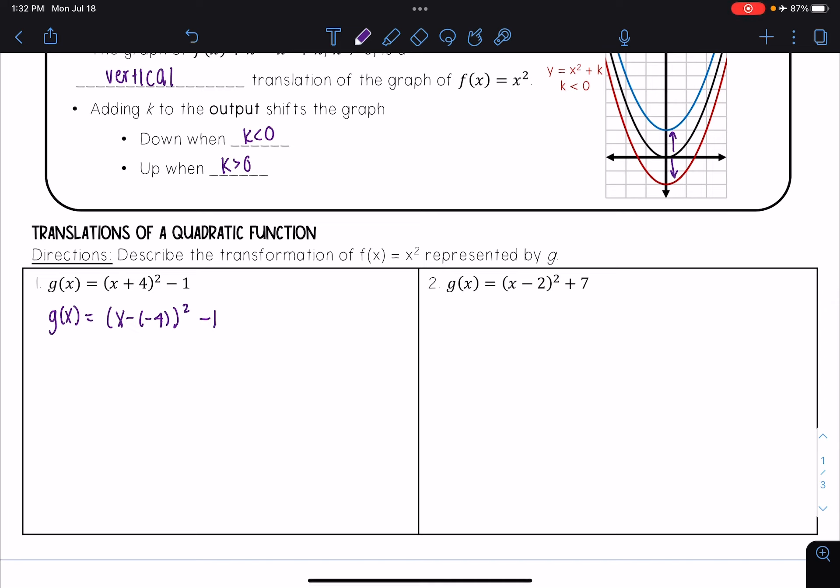I see here that my h is -4 and k is -1. Because h = -4 and k = -1, we see that the graph of g is a translation 4 units left and 1 unit down.